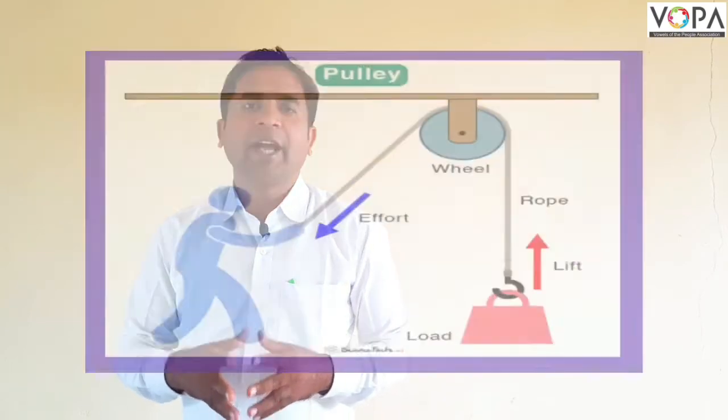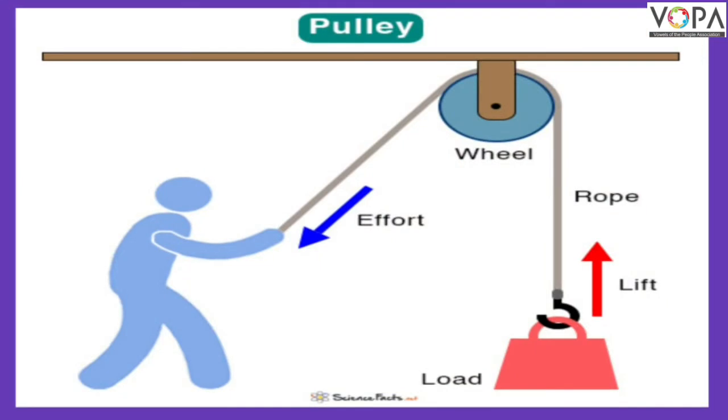Hello students and parents. Before this we understood the lever. Now we discuss about a simple machine pulley. It is used to lift a heavy object in the upward direction by applying a force in the downward direction.